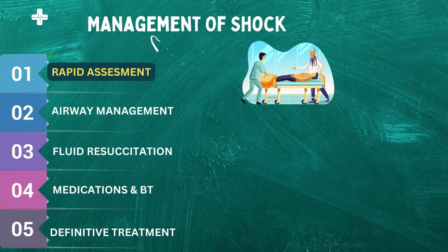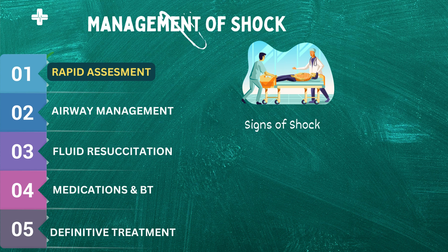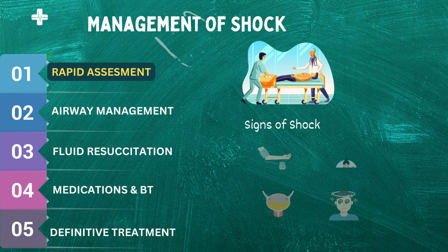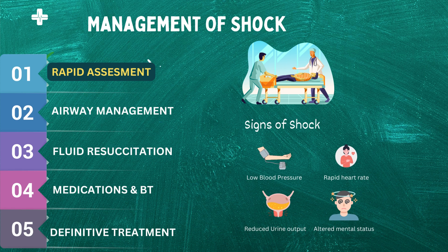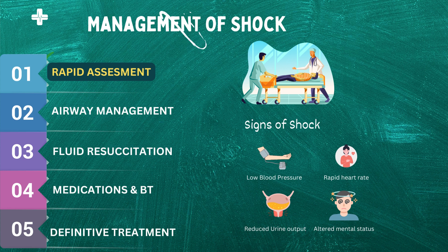Next, healthcare professionals will perform a physical exam to look for signs of shock. There are normally four primary signs of shock to look for in the emergency room: cold clammy skin, a rapid heart rate, low blood pressure, and an altered mental status. Additionally, healthcare professionals will assess the patient's urine output, which can be an indicator of how well the kidneys are functioning.